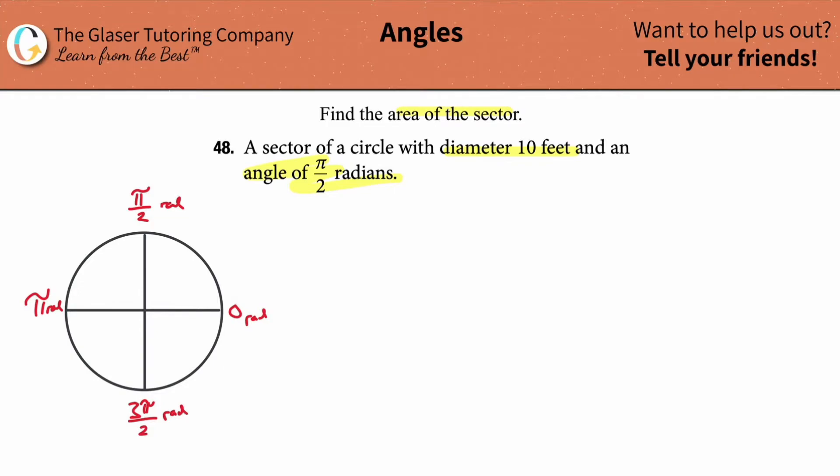So first, what is the sector they're talking about? They're telling us the angle of π/2 radians. So if you draw out the angle starting over here on the positive x-axis, which you always do, since it's positive we're rotating counterclockwise and we have to get to π/2 radians, which is right there. So this right here represents π/2 radians. This is the sector that's enclosed by these two radii. This is the area we're looking for.